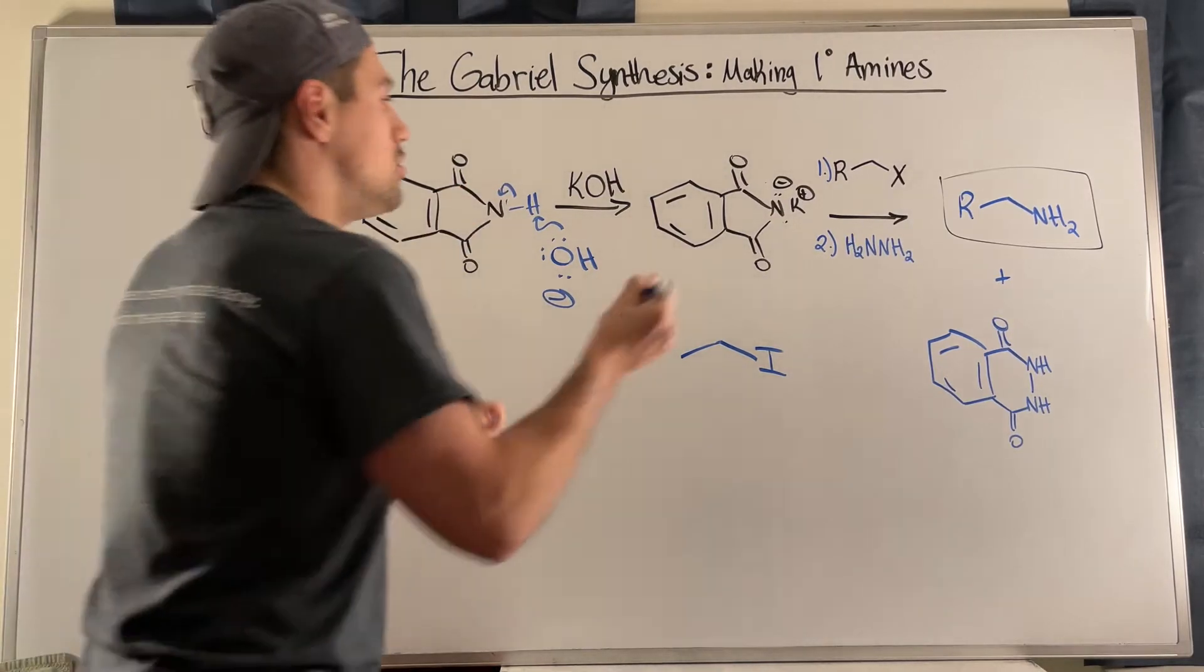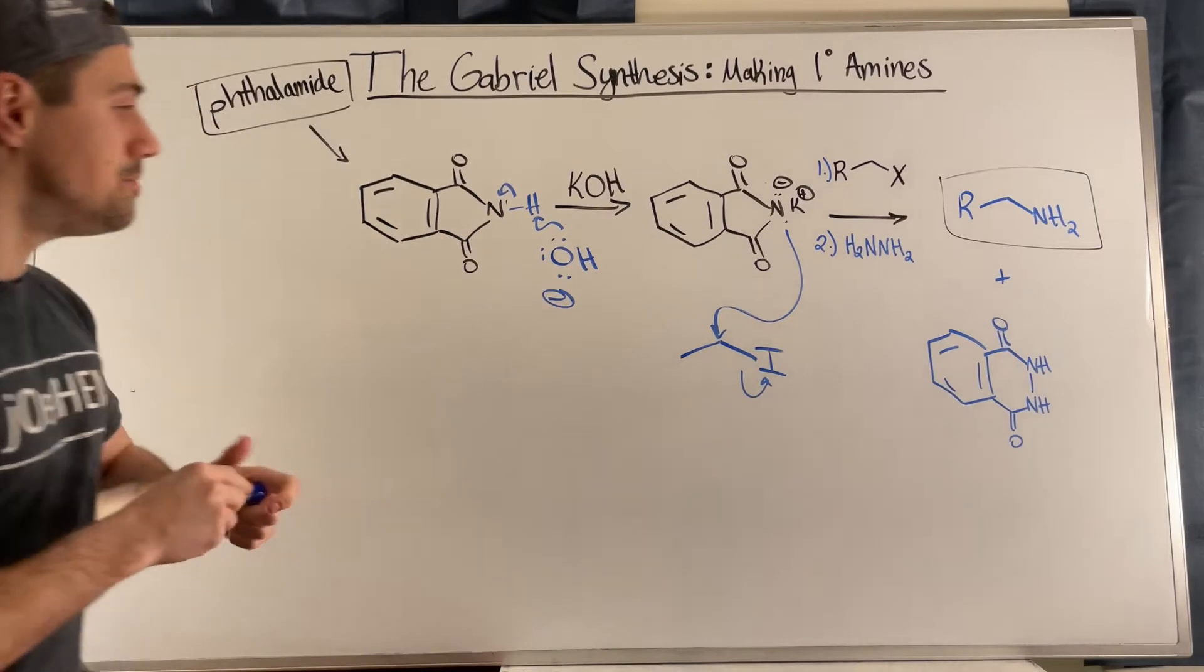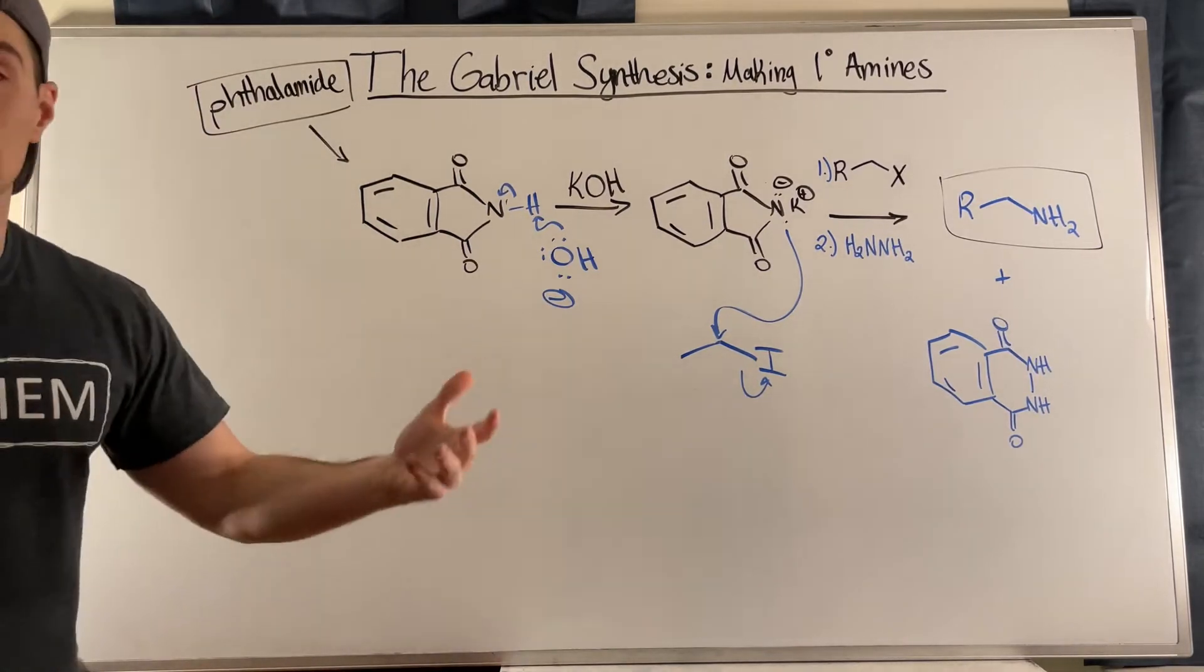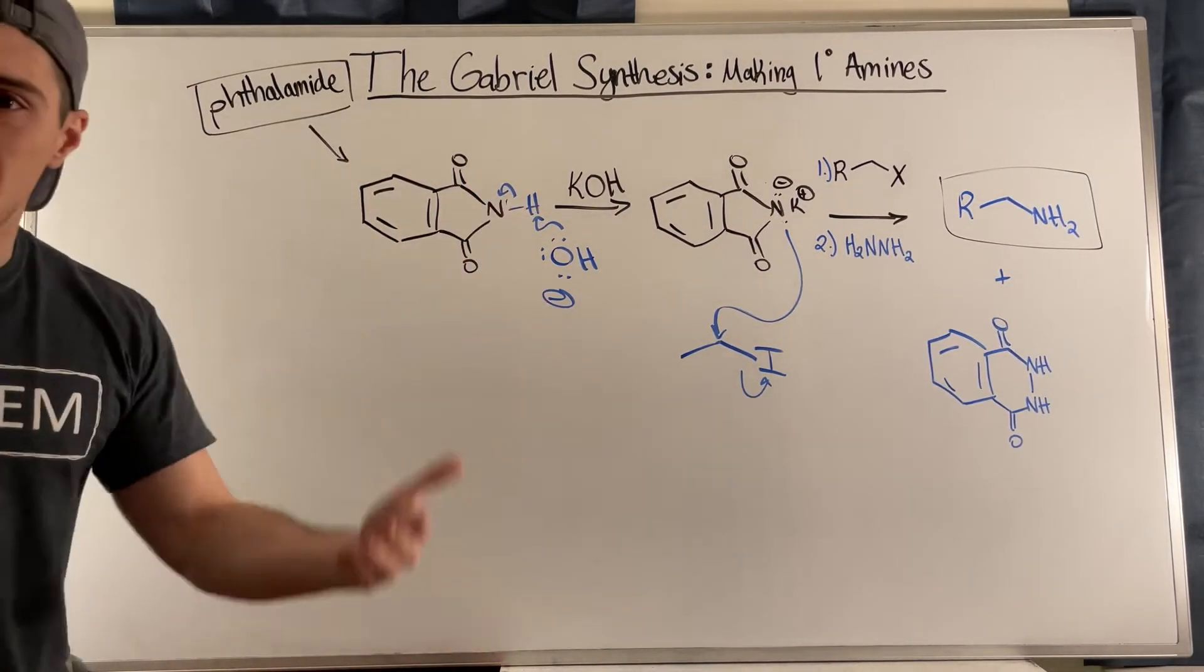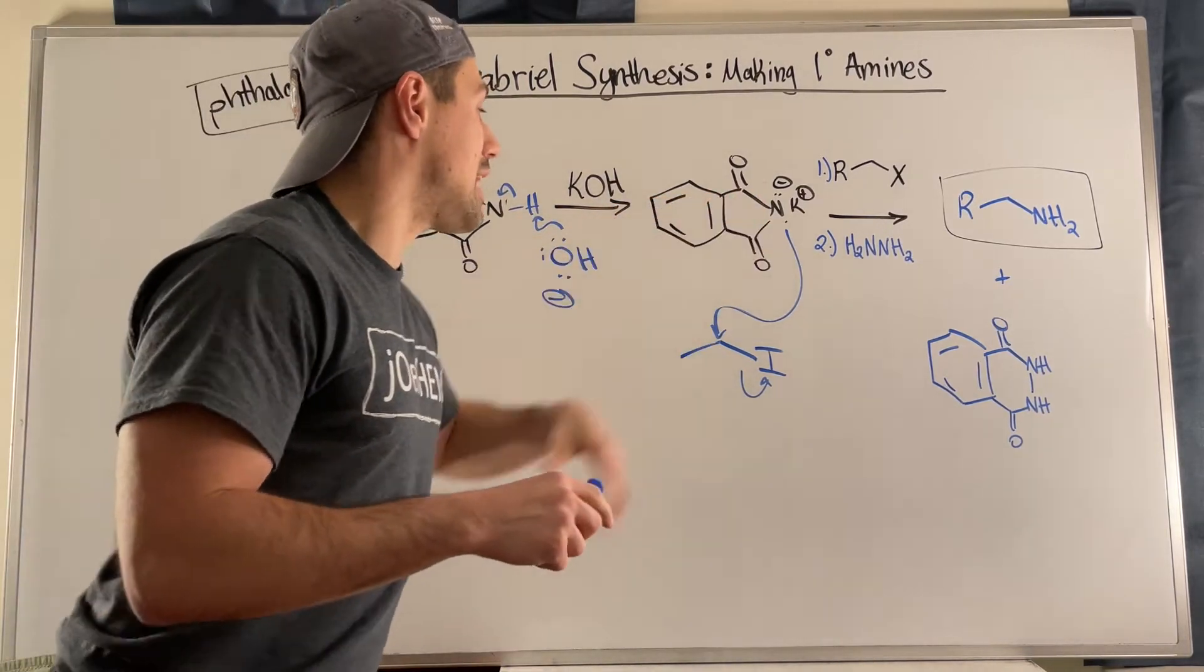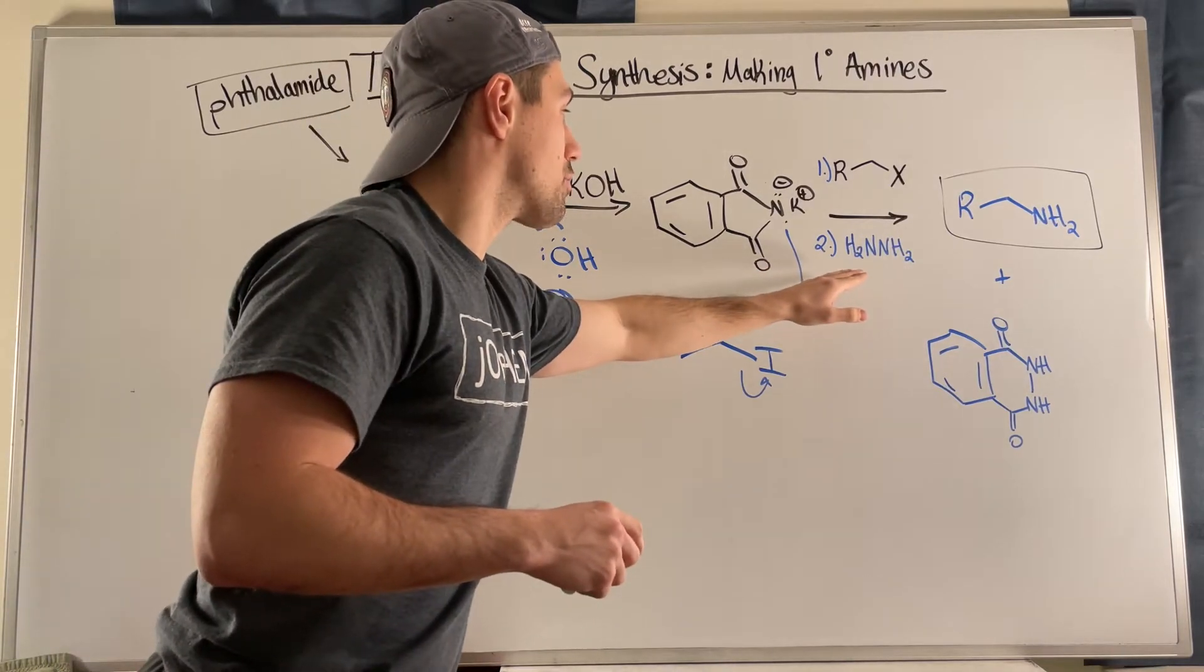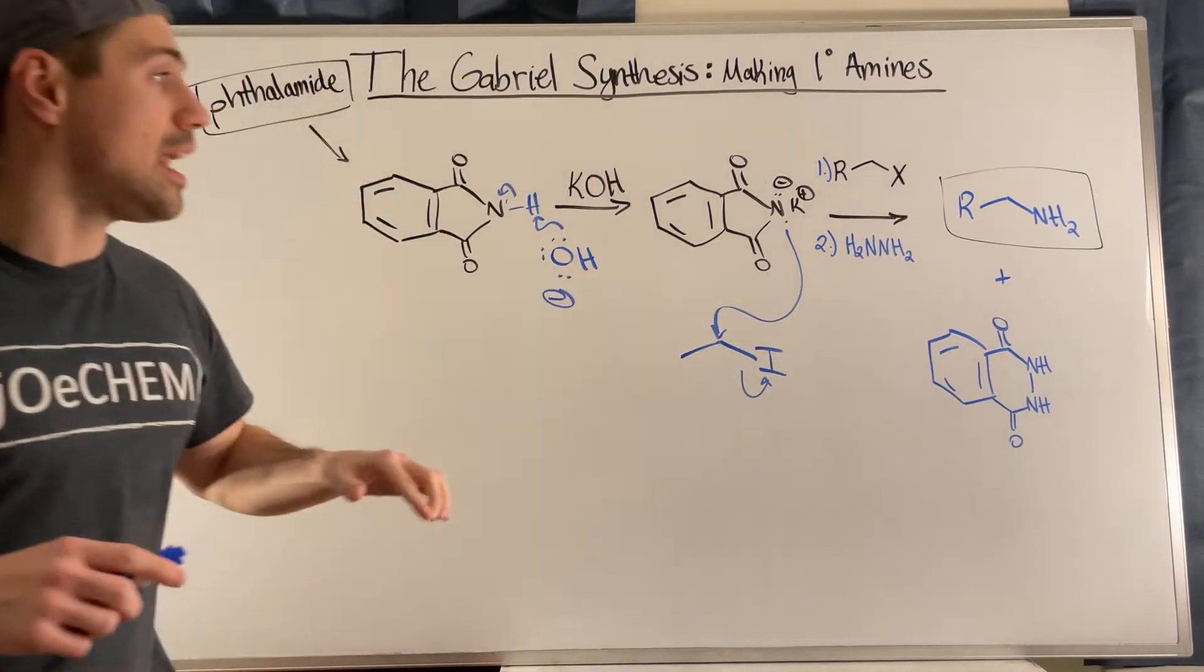This can then do SN2 on that primary carbon, attacking it, kicking off its good leaving group. That's a great way to then create a nitrogen-carbon bond.